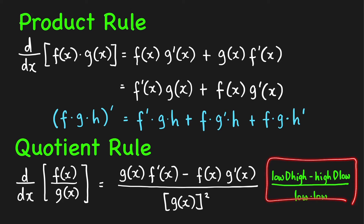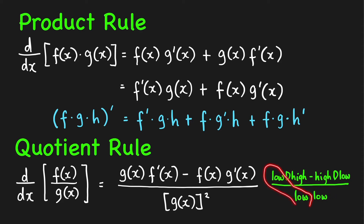The mnemonic is: low d high minus high d low over low low, where d means derivative. This is not hard to remember because the numerator and denominator both start with 'low.' Just recite this probably 10 times every day for a week, and you can easily remember this formula.